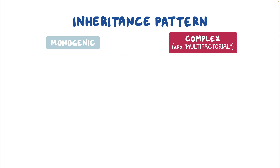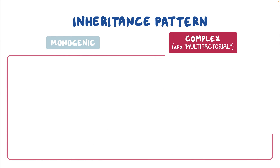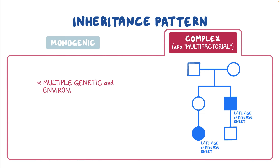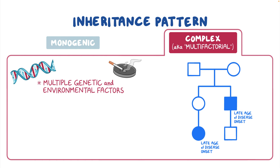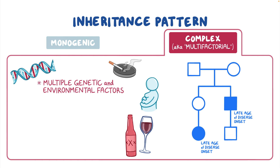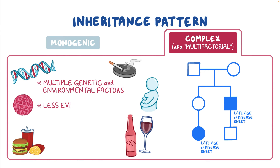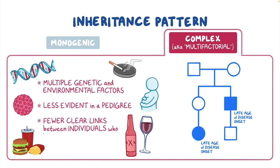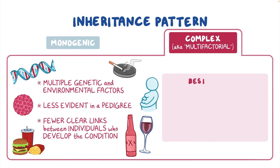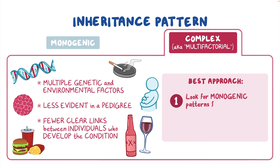Many conditions follow complex inheritance with multiple genetic and environmental factors influencing development of a condition. So in a pedigree, complex patterns may be less evident and often appear to have fewer clear links between individuals who develop the condition. The best approach to identifying the condition's cause or etiology is to look for monogenic patterns first and then, if all are eliminated, consider complex origins.